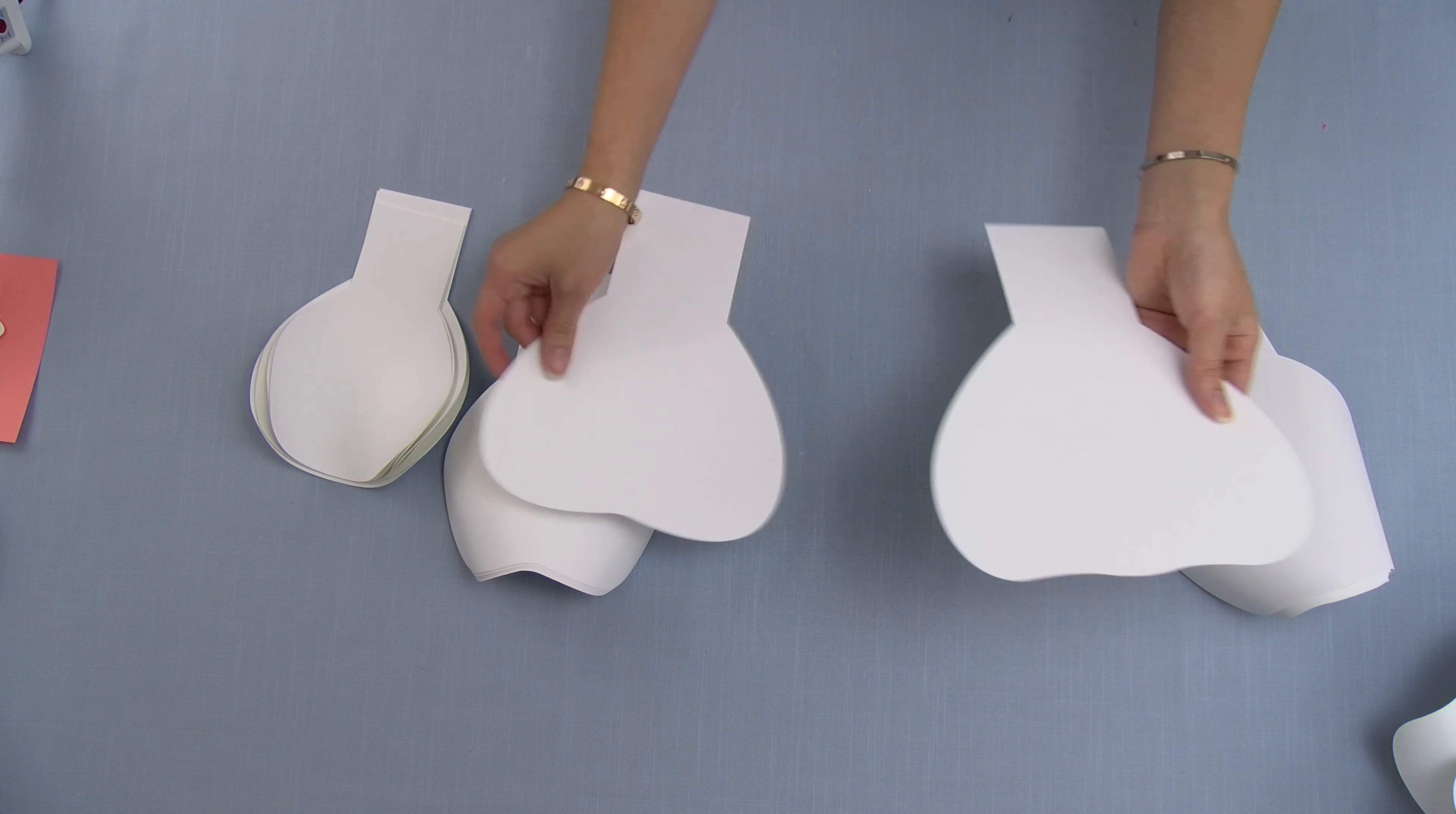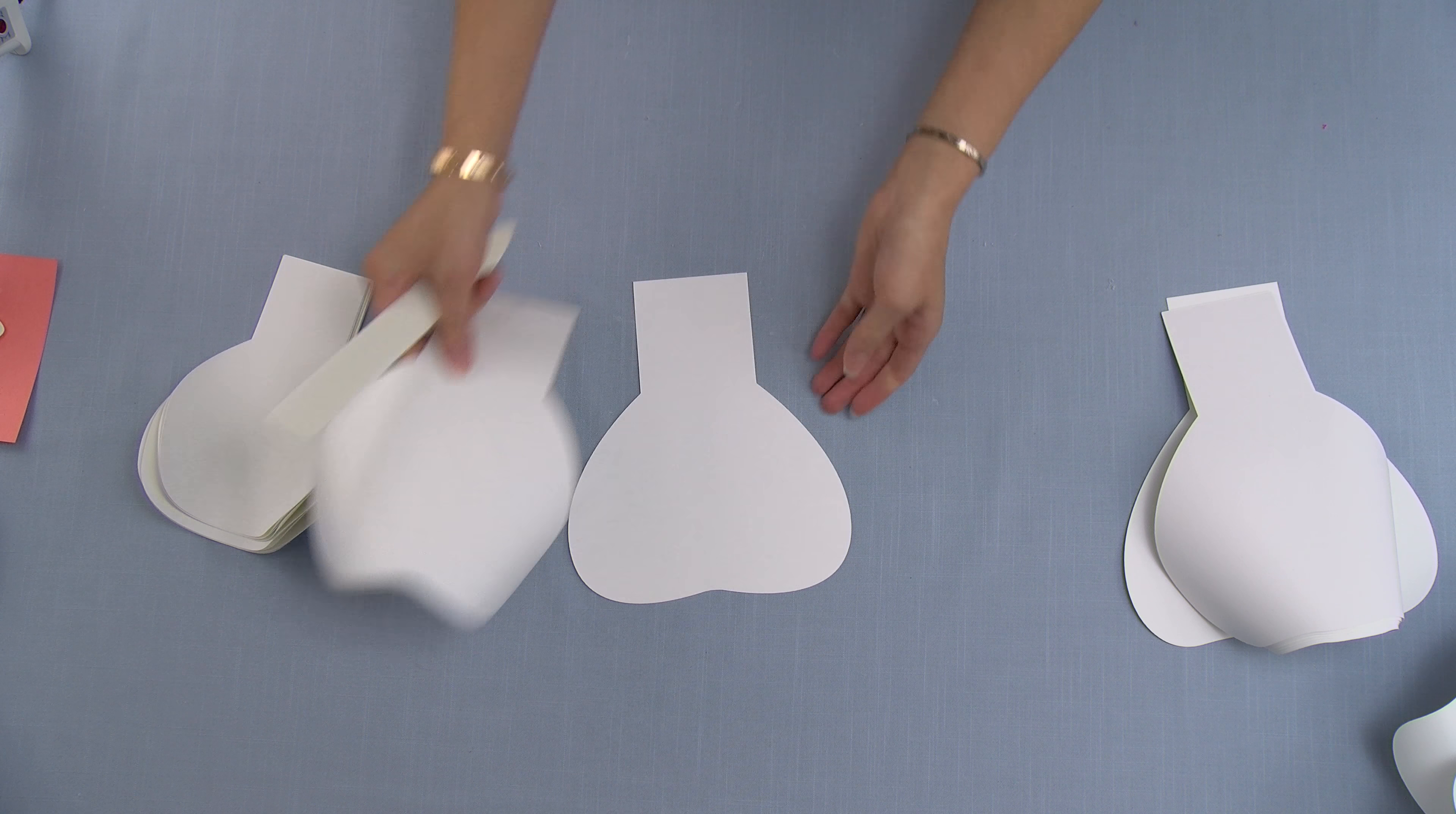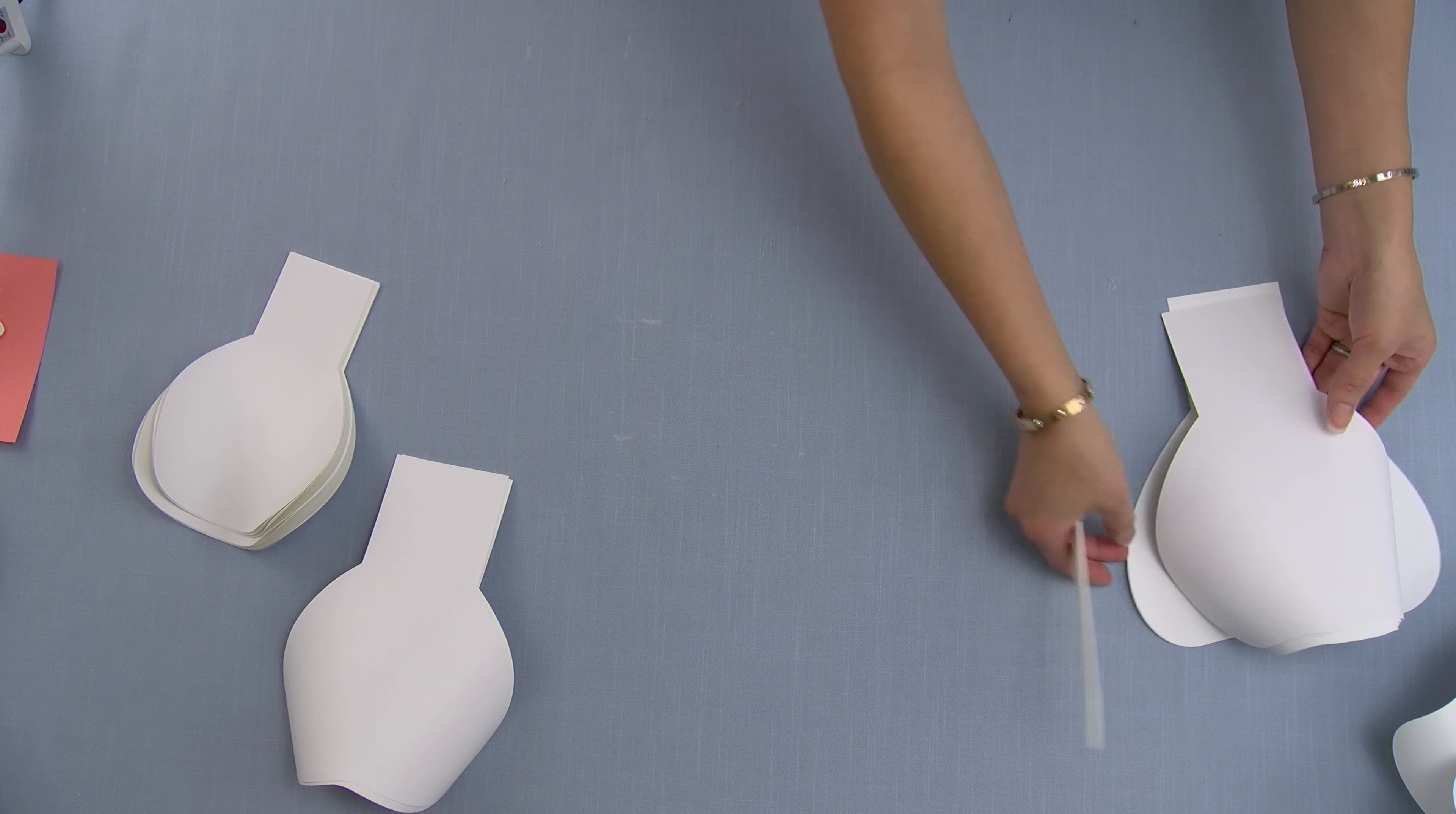So I already started by curling the petals for most of them, and I'm going to show you how to curl these last two petals that I didn't curl yet. I'm just going to slide this and it's going to give you the fold, and I'm just going to make sure the fold is going downwards so that I don't assemble the rose the wrong way.